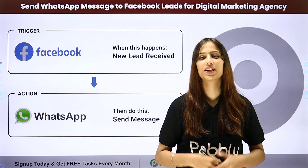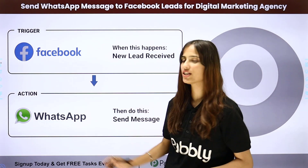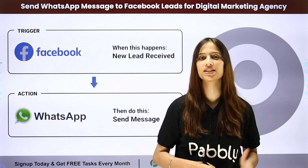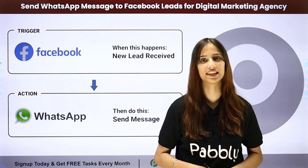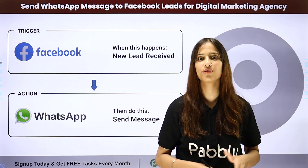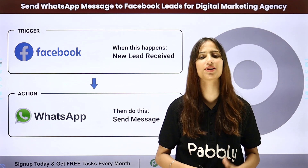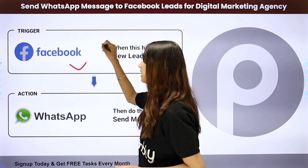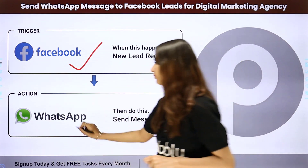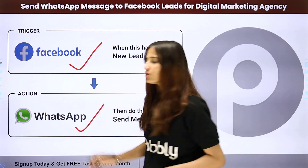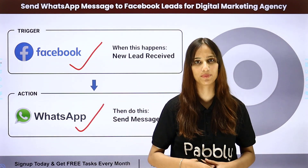To do this I need to build a connection between these two applications, for which I am going to use this amazing automation software, Pabbly Connect. Pabbly Connect follows the concept of trigger and action. My trigger application will be Facebook Lead Ads and my action application will be WhatsApp, specifically using WhatsApp Cloud API.